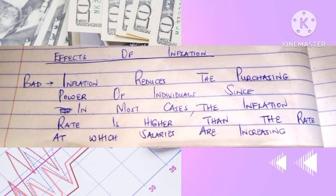For example, if an apple is worth five dollars now and ten dollars in seven years, if you had one thousand dollars now you can buy two hundred apples, but with the same thousand dollars after seven years you can only buy a hundred. So inflation reduces your purchasing power.